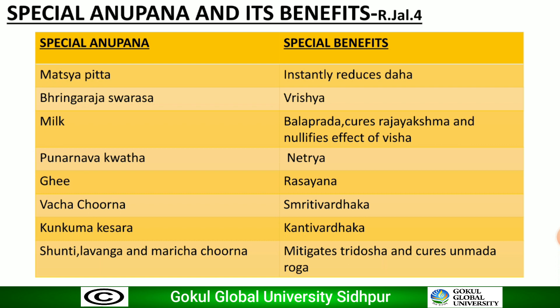Some special Anupanas and their specific benefits are mentioned in the classics: when given with Matsya Bhitta it instantly reduces Daha; with Bhringaraja Swarasa it gives Vrushya property; with milk it is Balaprada; with Punarnava Khwada it has Netriya property; with Ghee it acts as Rasayana; with Vrushya Churna it acts as Smriti Vardhaka; with Kunkuma Kesara it acts as Kanti Vardhaka; and with Shunti, Lavanga, and Marichu Churna it mitigates Tridosha and cures Unmada Roga.